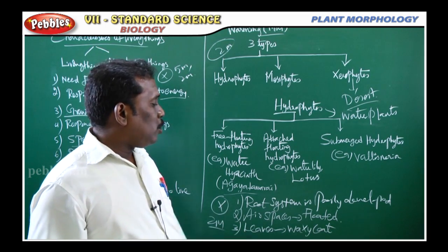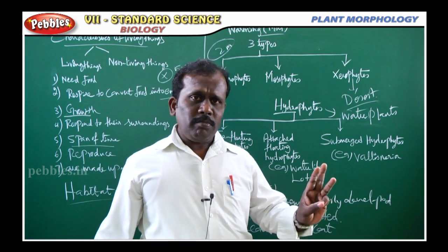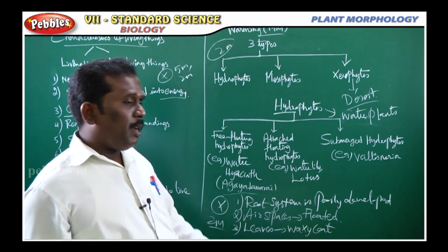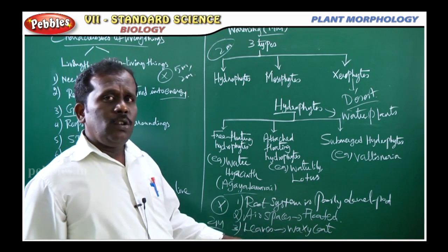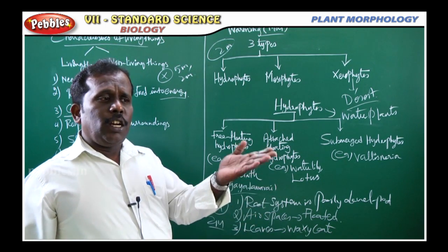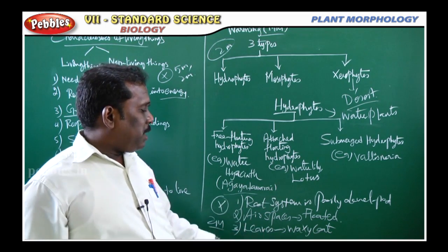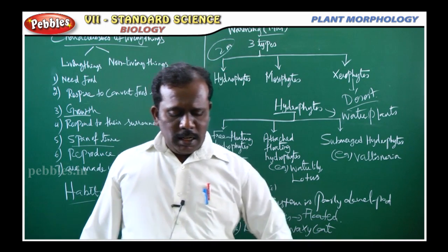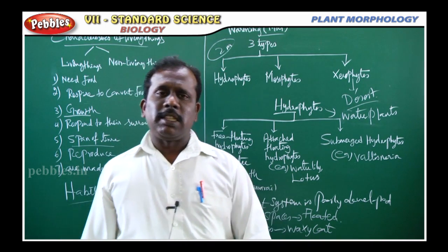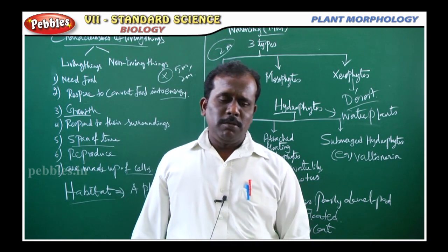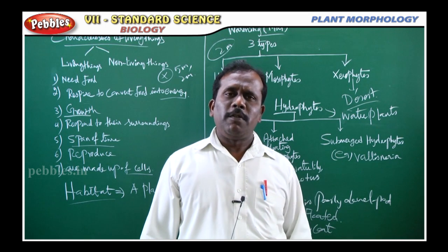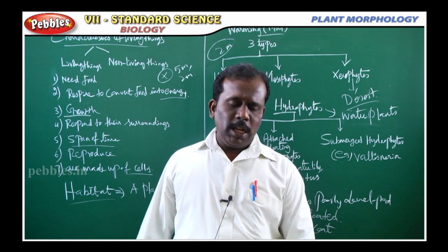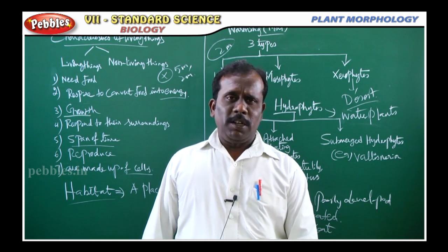To summarize the adaptations of hydrophytes: first, the root system is poorly developed; second, the stem and leaves have air spaces so the plant floats in water; and third, the leaves have a waxy coat that prevents decay in excess water. Next, we will discuss mesophytes.